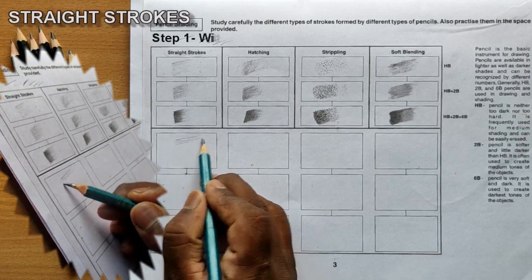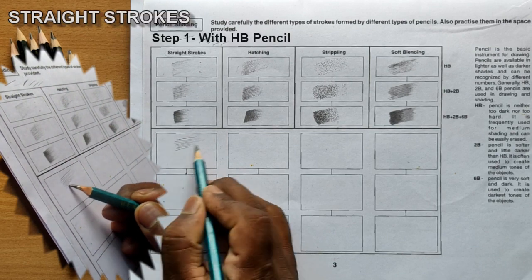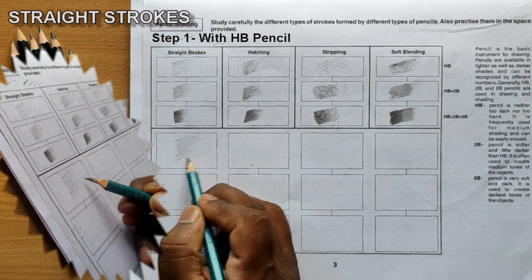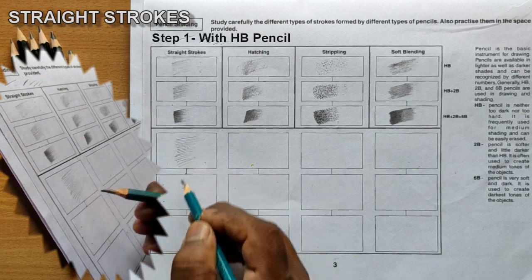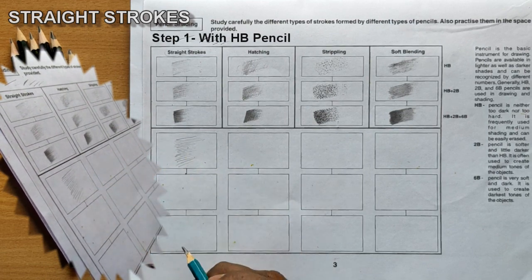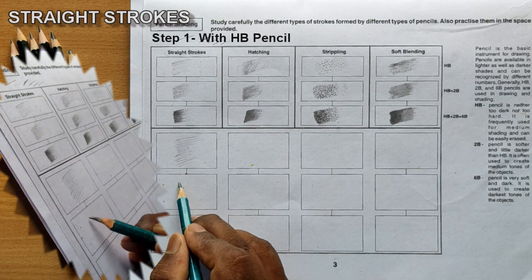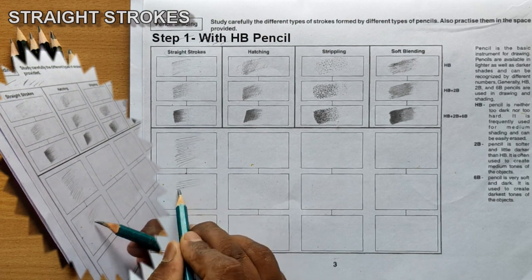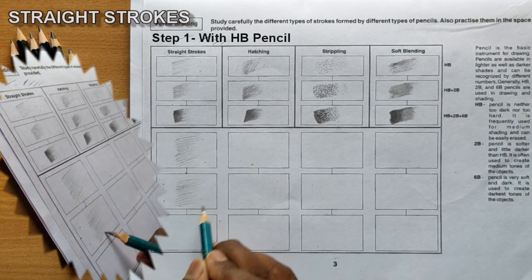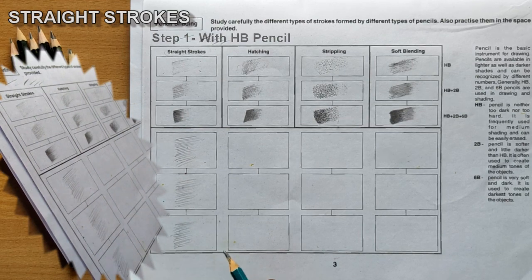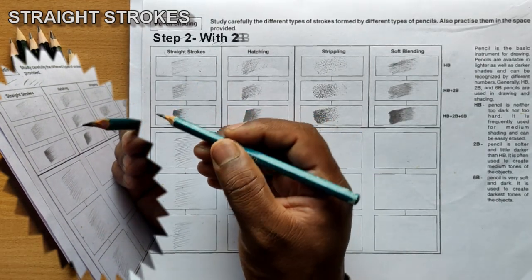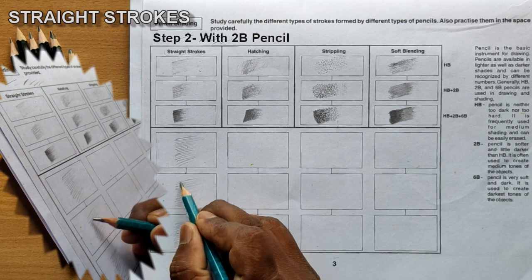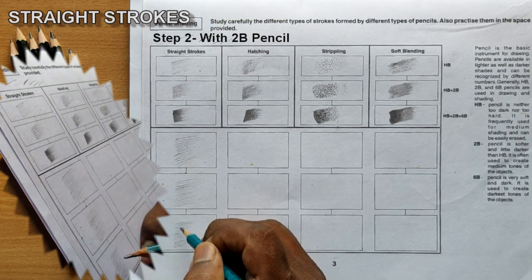As you are using an HB pencil you will be getting light lines. This is a three-stage method, so the first step is to be followed in all three boxes. Next, we have to take a 2B pencil and overlap on the first step.